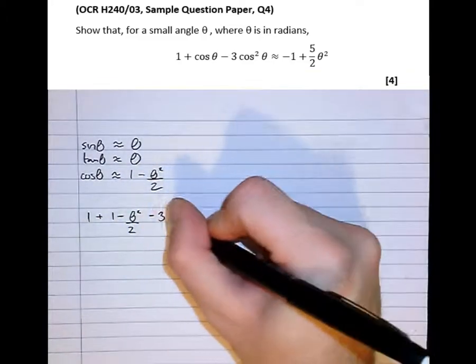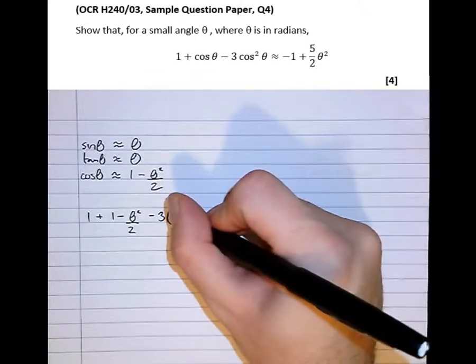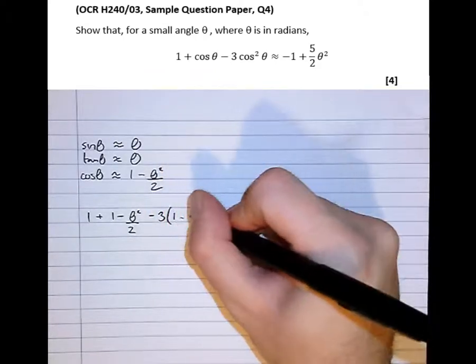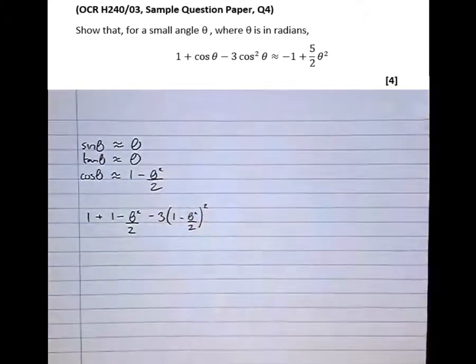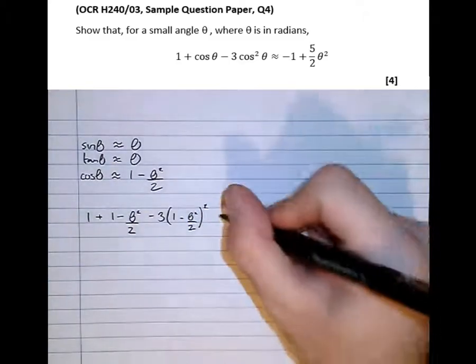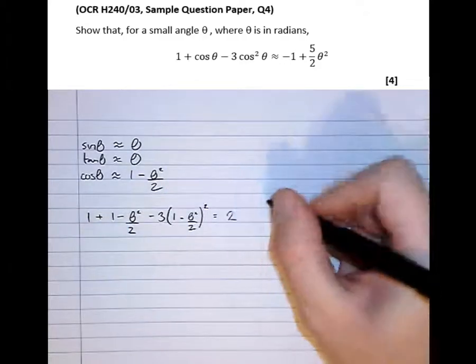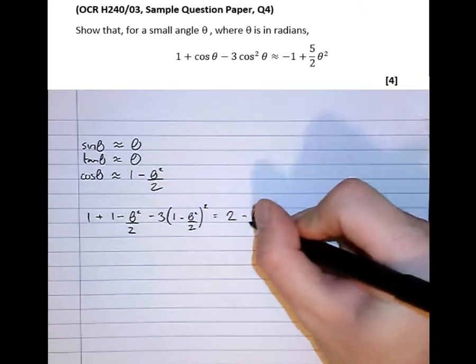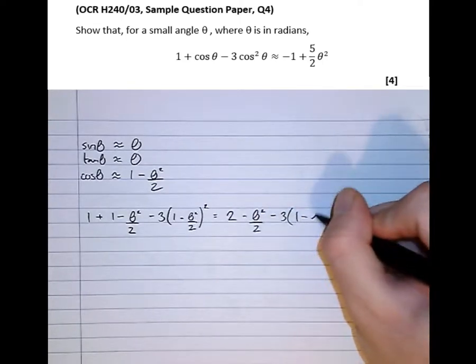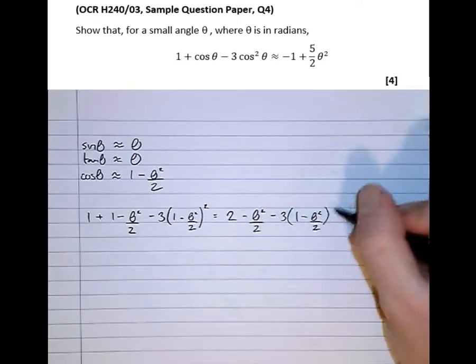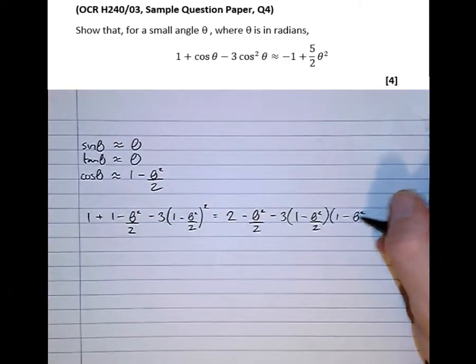And that's equal to 3 lots of, well cos squared theta is 1 minus theta squared over 2. That's cos, so cos squared is that there. So let's simplify that. 1 plus 1 is 2, minus theta squared over 2, minus 3 lots of 1 minus theta squared over 2, 1 minus theta squared over 2.